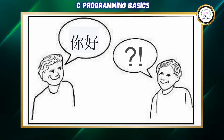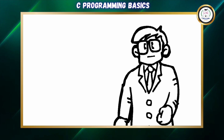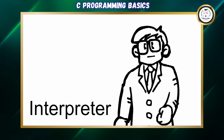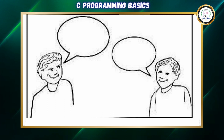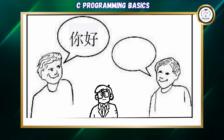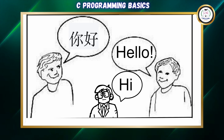So we need a person in between — a mediator, a middle person to interpret. His job is to interpret what the speaker is telling and translate it to the other person. The mediator will translate it into 'hi' and the responder will understand and say 'hello'.